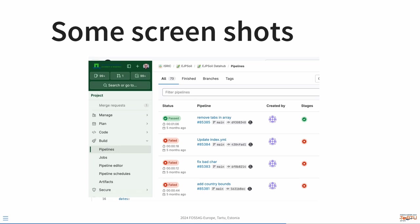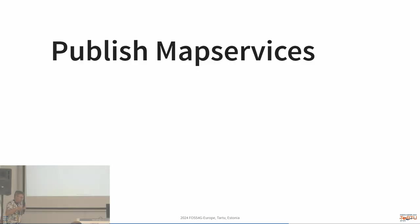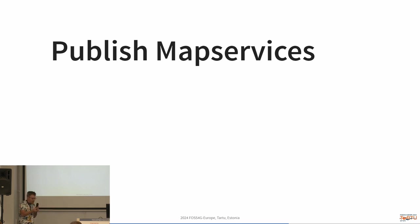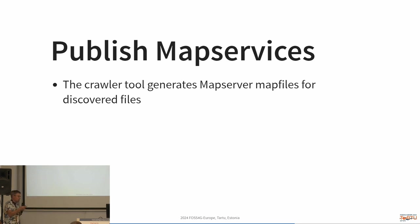That's the nice thing about pipelines — in GitLab you can see failed pipelines when something goes wrong with bad metadata, and at some point you're happy as a DevOps person because it passes and you can continue your daily activities. From that we also publish map services — we use the metadata title and abstract to create map services in MapServer. The crawler tool generates the map files used to set up these services and also puts back a link in the metadata pointing to those map services.